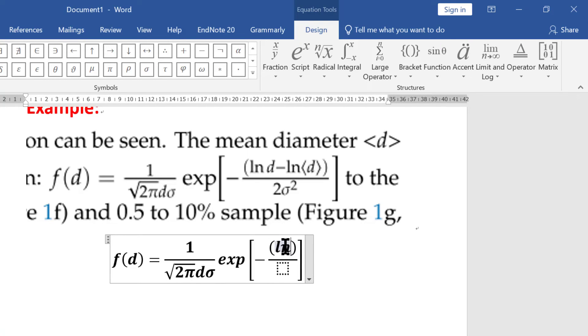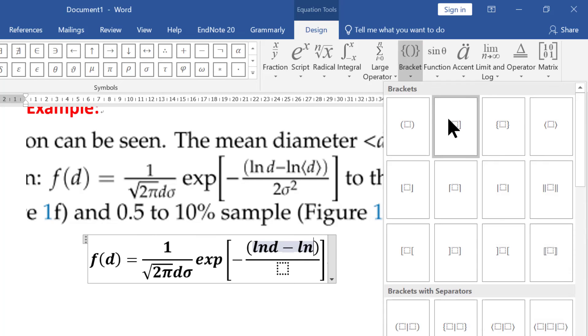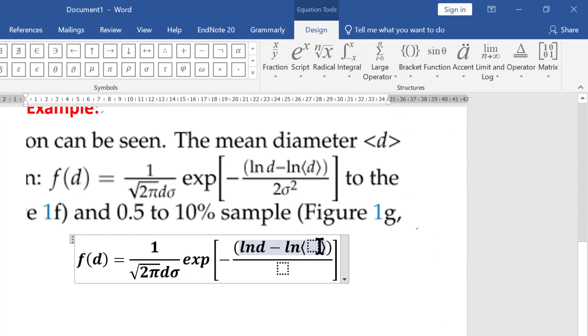Again you need a bracket, so go back to the bracket. This is the fourth option—this is angle bracket. Type the d. In the denominator 2.